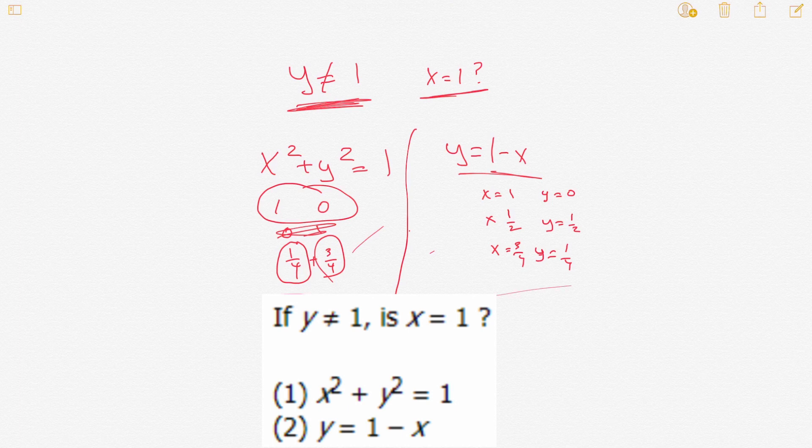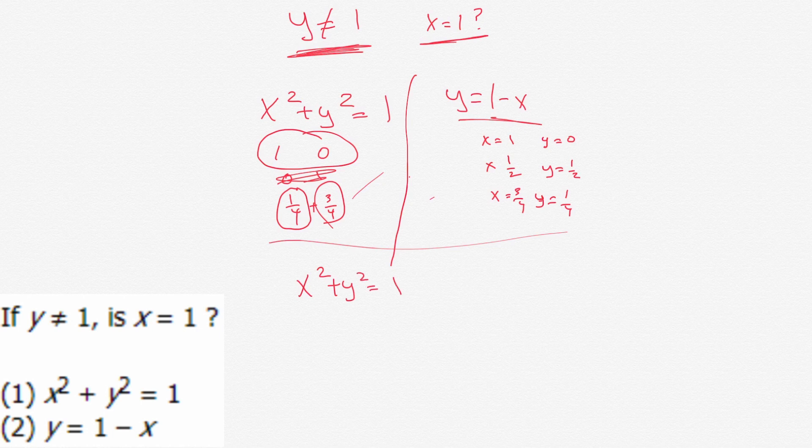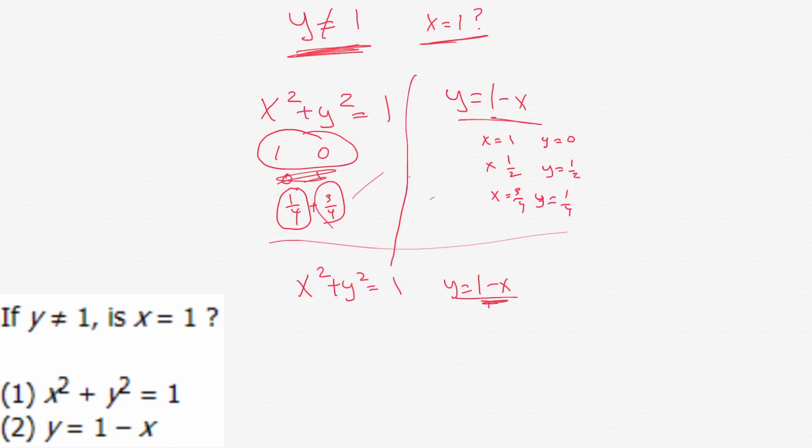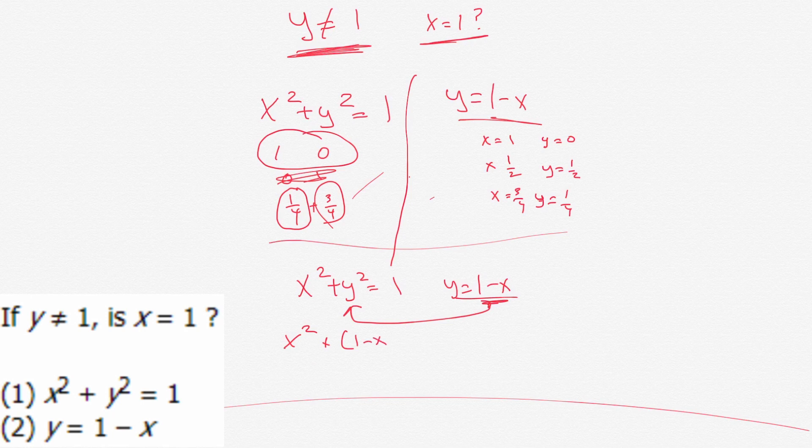So the next thing we got to do is try them both together. So we have x squared plus y squared equals one, and then we have y equals one minus x, we can substitute one minus x right there.